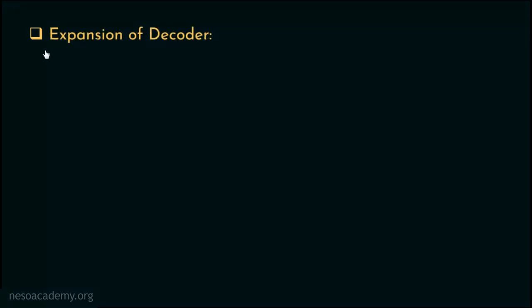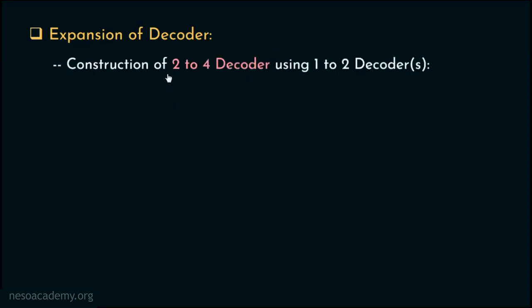Expansion of decoders is a phenomenon where, using decoders of lower configuration, we can construct a decoder with higher configuration. Suppose we are going to construct a 2-to-4 decoder with 1-to-2 decoders. Clearly, the 2-to-4 configuration is higher than 1-to-2.